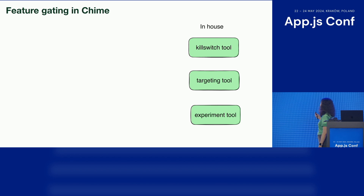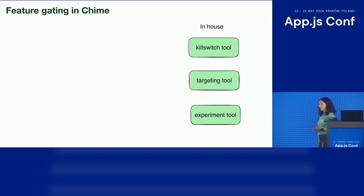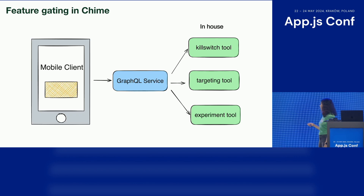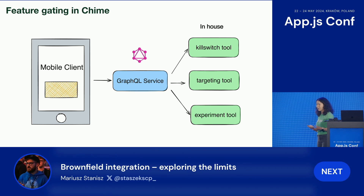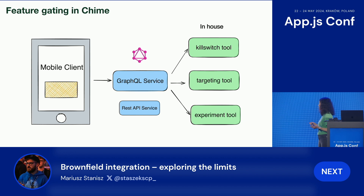In Chime, we have three different in-house feature gating rules in the backend: kill switch, targeting, and experiment. For targeting, it's used to target a specific group of users — for example, users who have set up direct deposit with us. The experiment rule is used to run the A/B test. We have a GraphQL service that will talk to these three different tools directly. For folks not familiar with GraphQL, it's a very convenient query language, and the service works similarly to a normal REST API service and communicates with mobile clients.